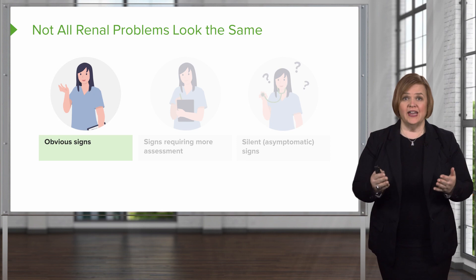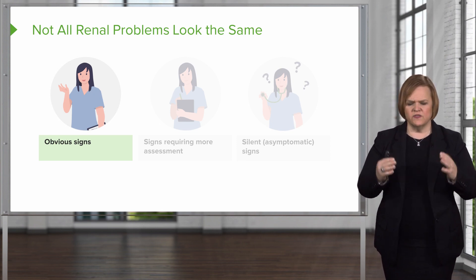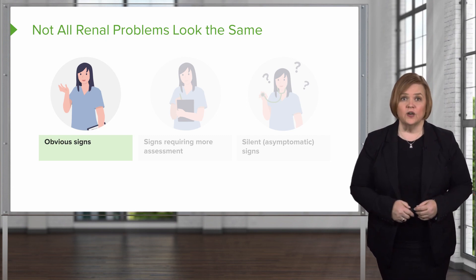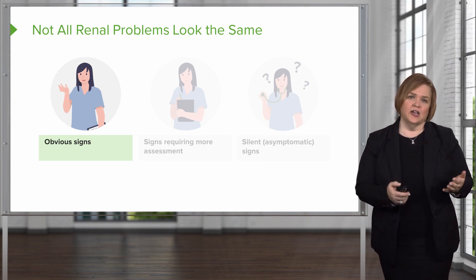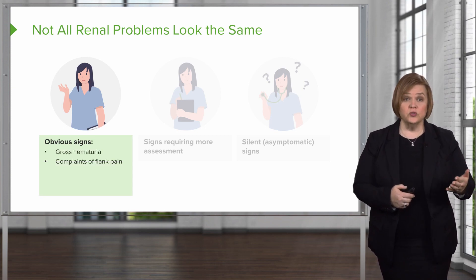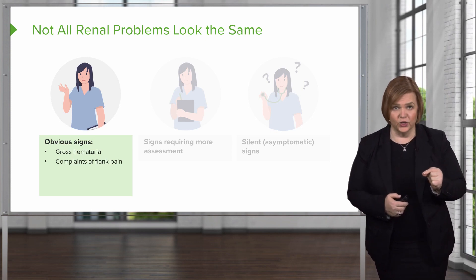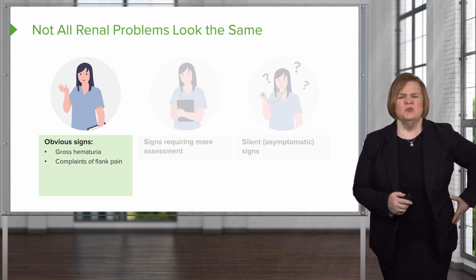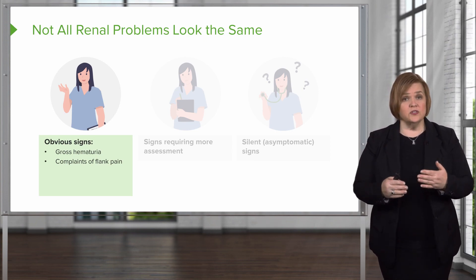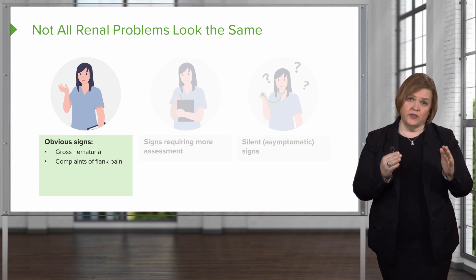Now let's look at three categories of things you can be looking for as a nurse assessing renal problems. The first group are pretty obvious signs. If you saw a patient who had gross hematuria — that means a lot of blood in their urine — you're going to know right away things are not right. Also, if they're complaining of really bad flank pain, those are acute symptoms that let you know there's a definite problem. We'll call those the obvious category.